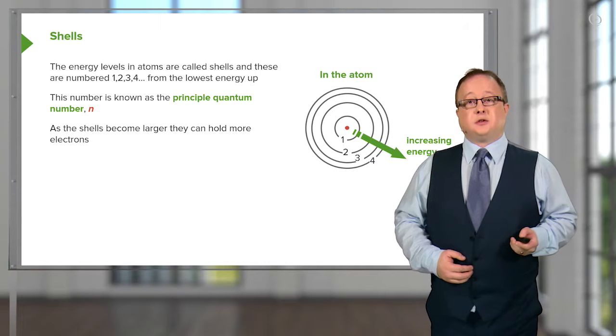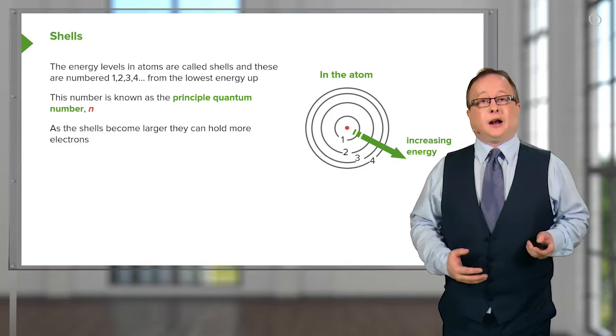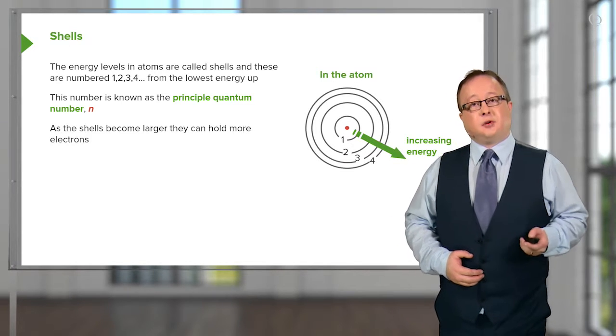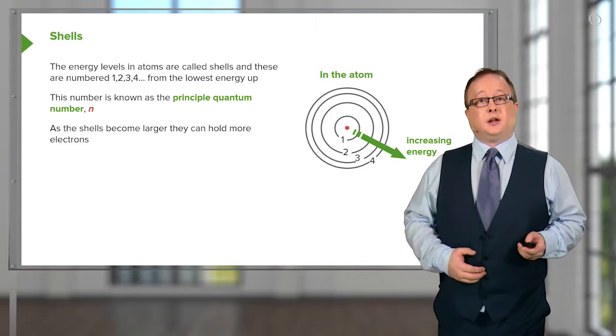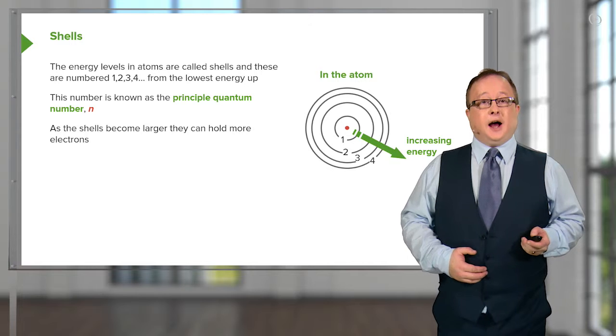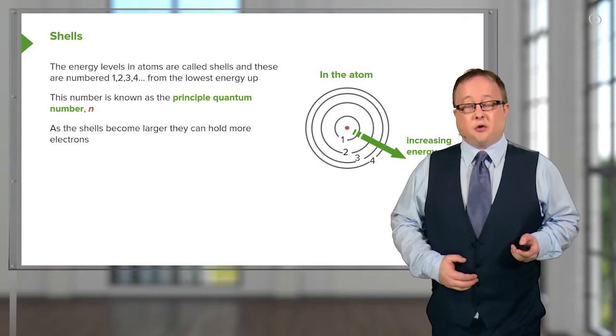Electrons, rather than existing as a random cloud at a specific distance, exist at a number of different distances from the central nucleus. The lowest energies are actually further away.